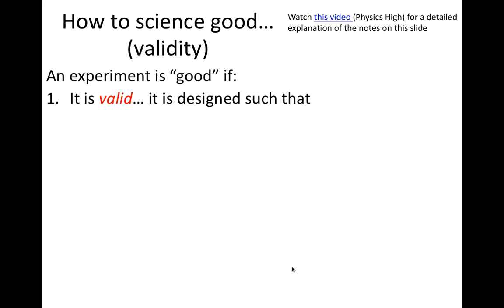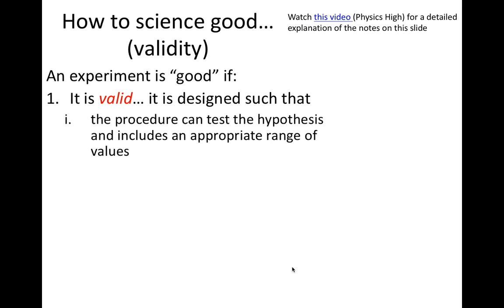The first aspect of a good experiment is validity. You should remember that in the scientific method, an experiment is designed to test a hypothesis. A valid experiment is one designed so that its results provide a way to disprove a hypothesis. If the experiment disproves the hypothesis, then the scientific method says we need a new hypothesis to test. If the hypothesis is not disproved, we say that the experiment is consistent with the hypothesis.